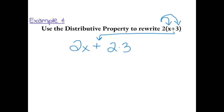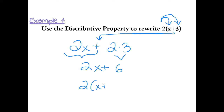Now we can simplify. 2x just stays 2x, but 2 times 3 can become 6. And now we can just bring everything else down. So 2 times the sum of x plus 3 is equal to 2x plus 6.